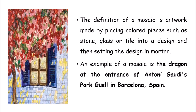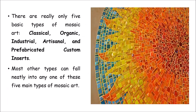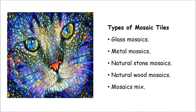A famous example of mosaic art is the dragon at the entrance of Antoni Gaudí's Park in Barcelona, Spain. Here you can see various colors — red merging into orange, then yellow, and hues of blue. There are typically five types of mosaic art: classical, organic, industrial, artisanal, and prefabricated custom inserts. Various stones, colored glasses, metals, natural stones, and even semi-precious stones can be used to achieve these effects.